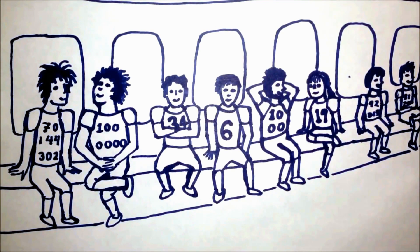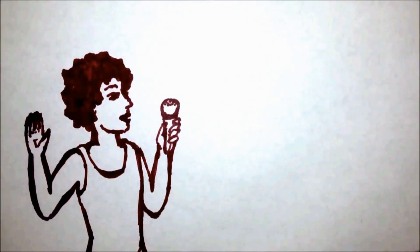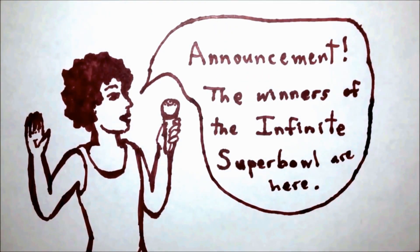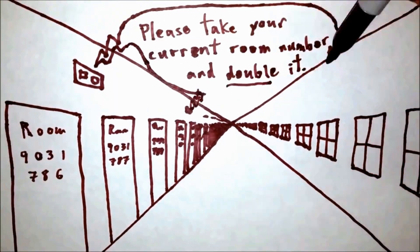How can you possibly make room for them? Well, this is how: Get on the intercom and announce to every room at once: 'The winners of the infinite Super Bowl are here. We need to make room for them. Please take your current room number and double it.'